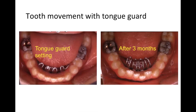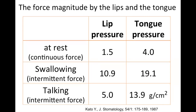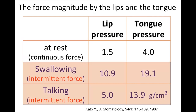What is the strength of the force exerted by the lips and tongue on the teeth? There have been many studies on this, but I will show you data obtained by Dr. Kato here. Similar data have been obtained by other researchers. The continuous force of the lips or tongue in contact with teeth in a rest situation is less than 5 grams per square centimeter. Also, it seems that intermittent force of less than 20 grams per square centimeter is applied when swallowing or when talking.